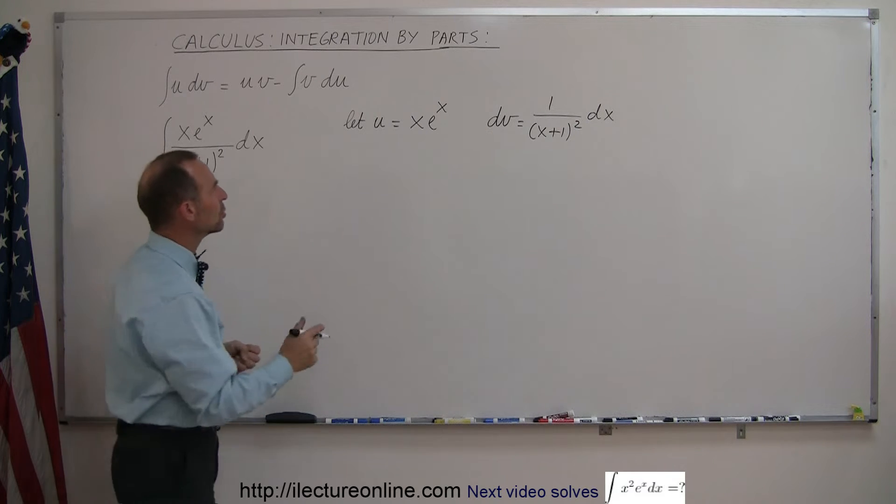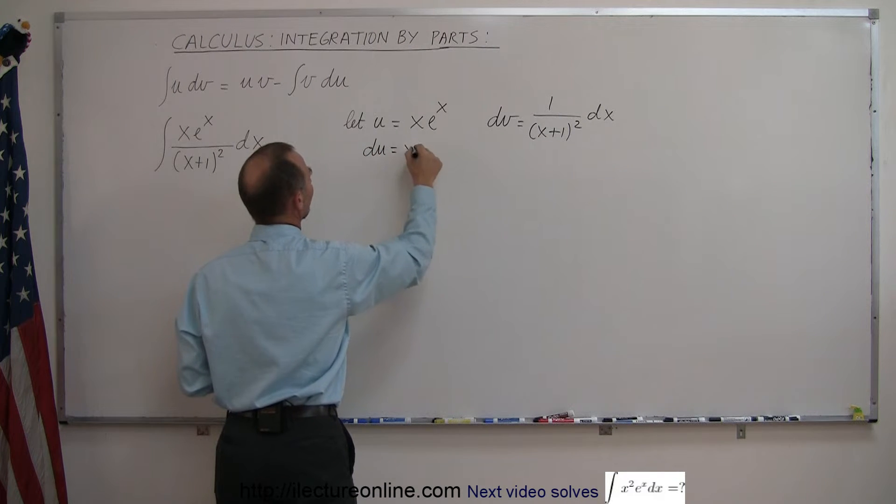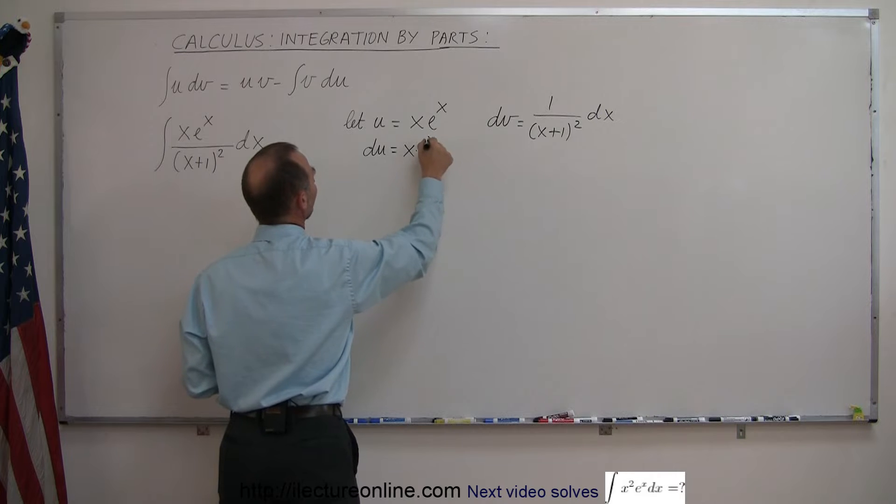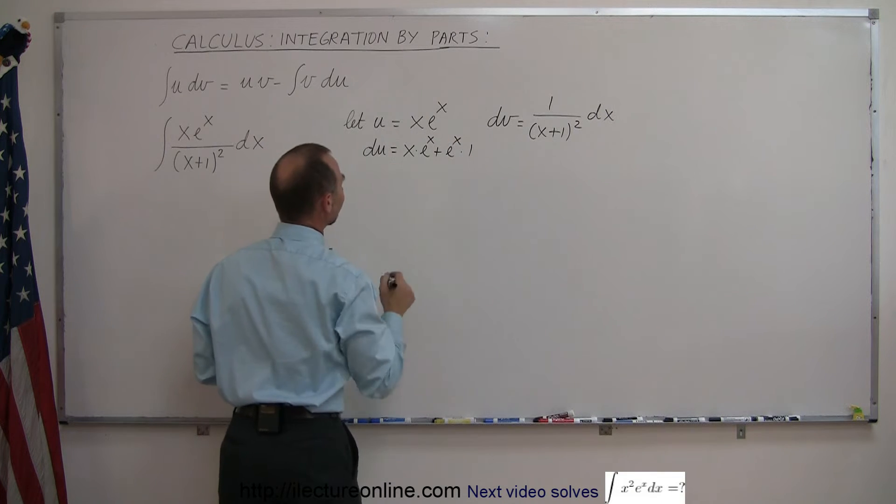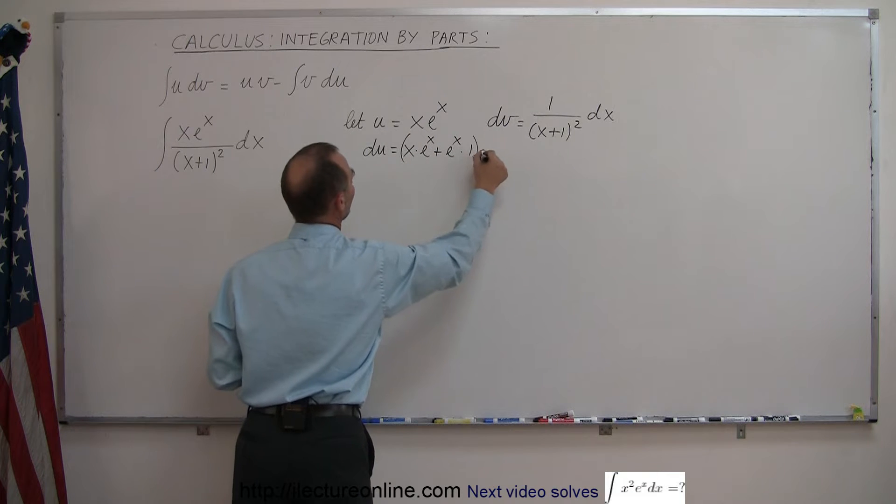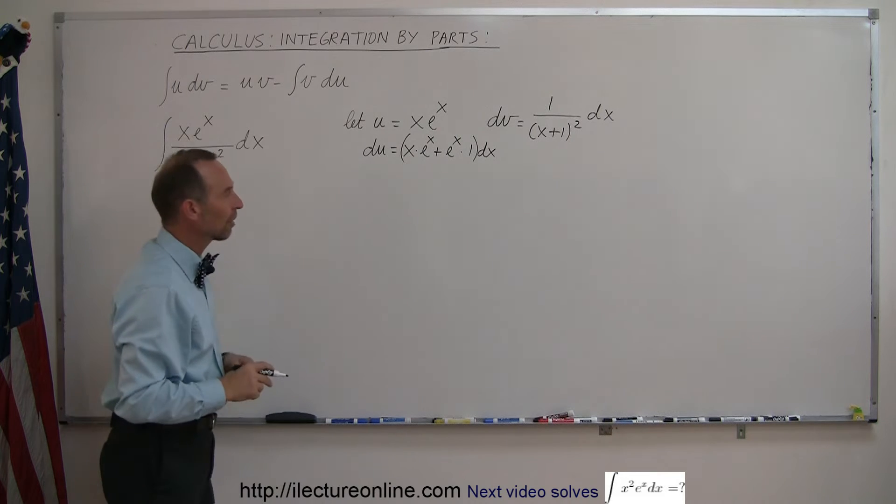What is your du? And so your du is equal to, well this is a product, so we take the first times the derivative of the second plus the second times the derivative of the first times dx, because actually this is du dx and we put the dx over there, so we have the differential.